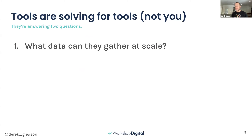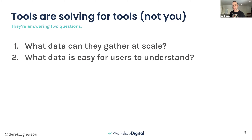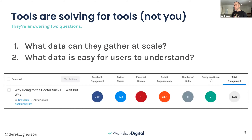We know there are platforms these tools are completely missing. LinkedIn is hard to scrape — nobody has LinkedIn data — and anybody working in B2B would love to know what's performing there. Also, these tools are growing by attracting entry-level people, so they give you a pile of data without interesting manipulation. BuzzSumo's total engagement score is literally Facebook plus Twitter plus Pinterest plus Reddit plus links plus Evergreen — which is like saying baseball equals runs plus hits plus home runs minus errors times games. It makes no sense, but we just accept it.